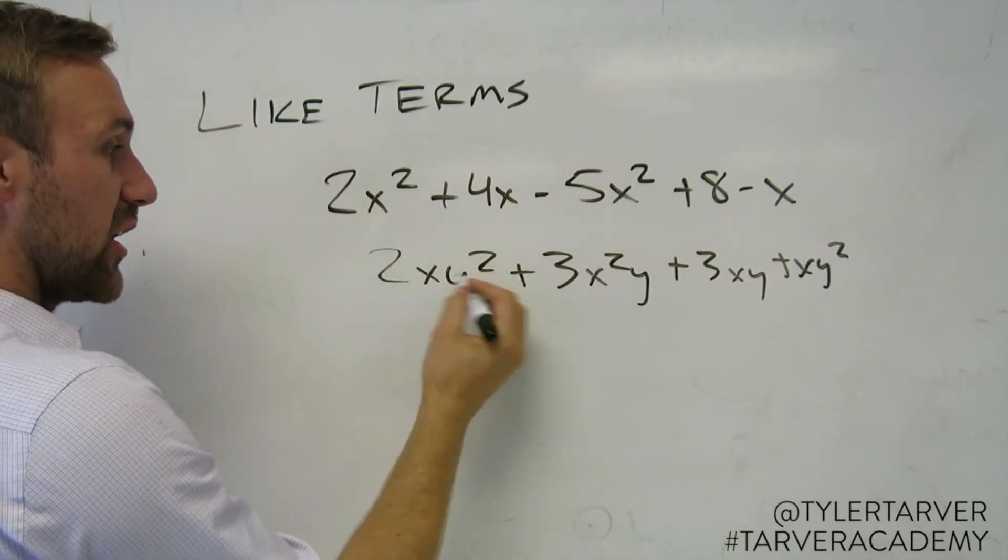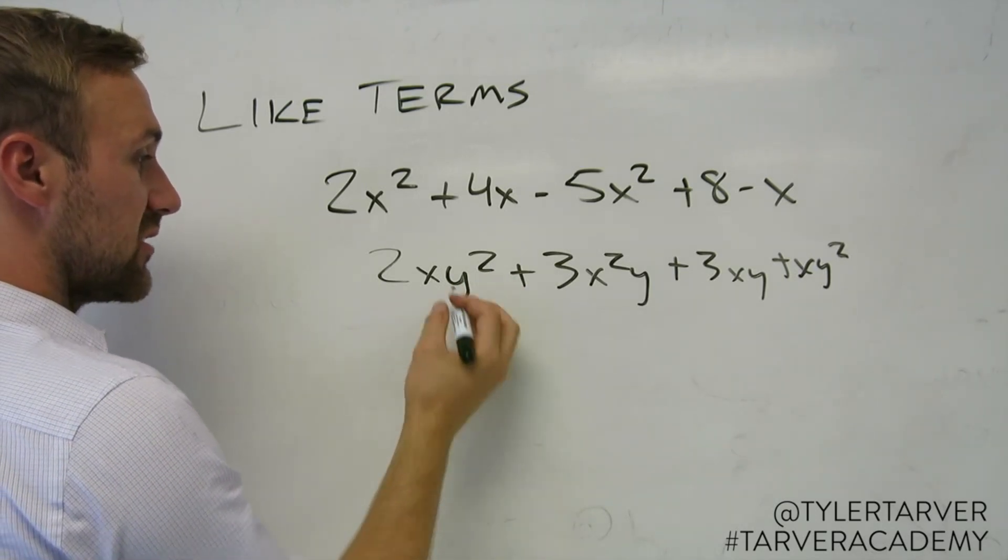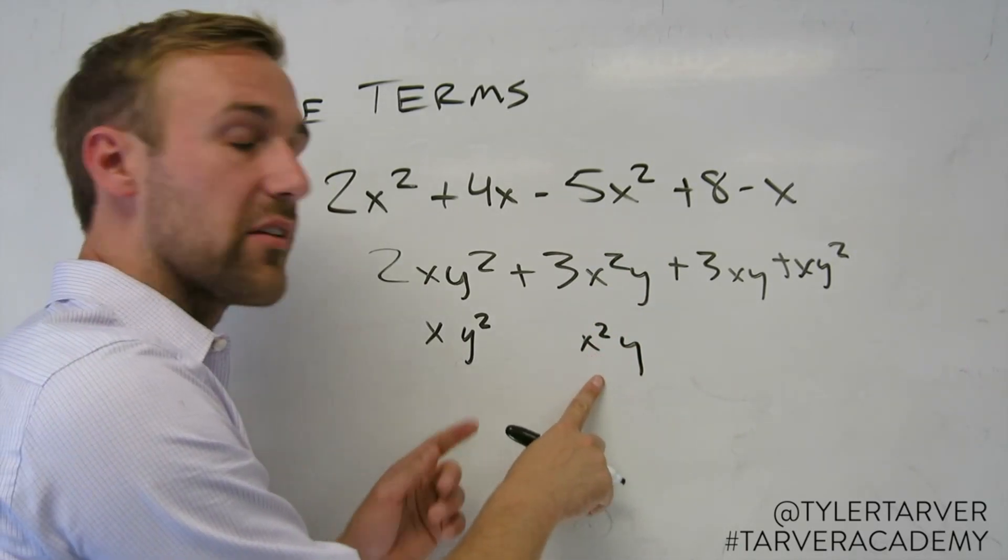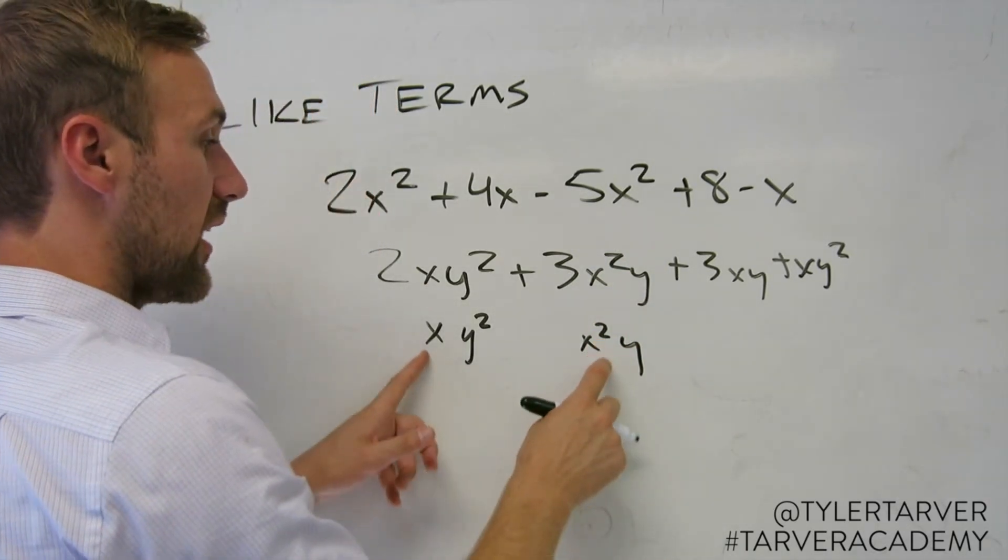Forget about your numbers. Look at your variables and exponents. You've got x, one of the x's, y squared. You've got x squared and a y. Oh, you're like, oh, these are like terms. No, they're not.